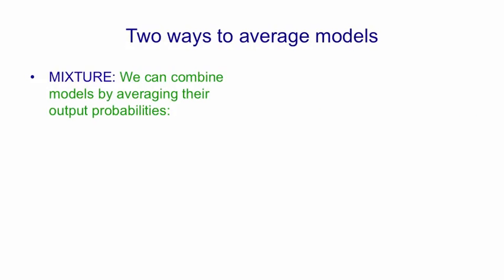I want to start by describing two different ways of combining the outputs of multiple models. In a mixture, we combine models by averaging their output probabilities. So if model A assigns probabilities of 0.3, 0.2, and 0.5 to three different answers, and model B assigns probabilities of 0.1, 0.8, and 0.1, the combined model simply assigns the averages of those probabilities.